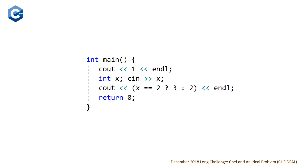Here is our C++ solution. The way we're doing this is that we're always going to guess number one as our first guess, and then based on what we get back we're either going to guess three or two. So we output one, then we do our flush which takes place in our endl, then we read in x, and if x is equal to two we output three, otherwise we output two — and that's all there is to it.